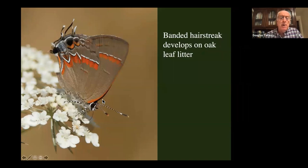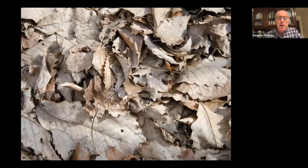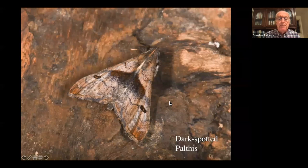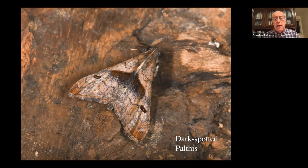There are a few butterflies that specialize on oak leaf litter — like the banded hairstreak, whose caterpillar eats dead leaves. There are also 70 species of moths called litter moths that eat leaf litter: the ambiguous litter moth, the American Idia, the dark-spotted Palthis, and 67 other species. When we rake up our leaves, mulch them with our mower, or throw them out as trash, we're throwing out all that life along with them.